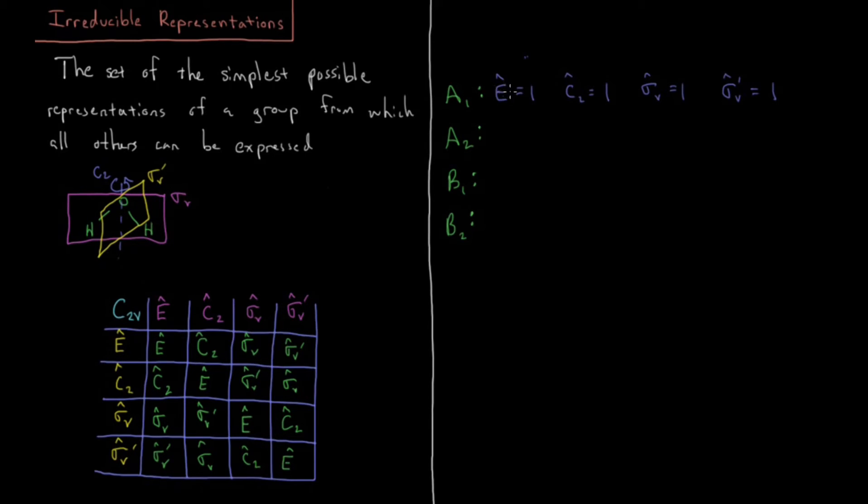E times E, 1 times 1 should be 1, and 1 is also E, so that's correct. And any combination of these you would see are correct because everything here is just 1. 1 times 1 is 1. Every operator is every operator. This multiplication table is fairly trivial as a result.